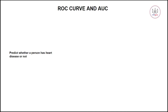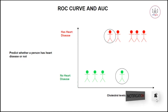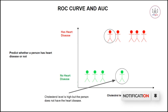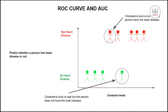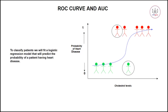Now let's consider that you want to predict whether a person has heart disease or not. You have the cholesterol levels of these persons. Two important points to note: one person has a high cholesterol level but does not have heart disease, and another person has a low cholesterol level but does have heart disease. Now let's say you build a logistic regression model.